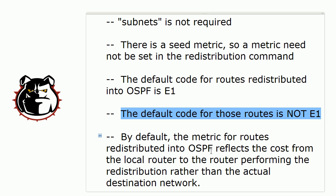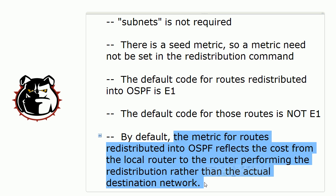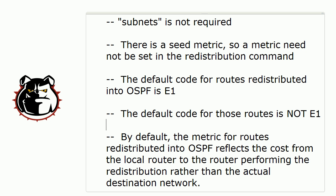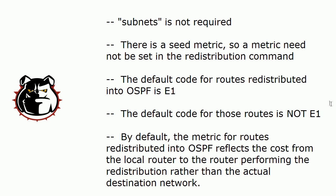Now watch statement five carefully. The metric for E2 routes redistributed into OSPF — we know the default is E2 — does it reflect the cost from the local router to the router performing redistribution? Actually, that's false. It's easy in a hurry to say 'true, because E2 routes don't reflect the entire cost' — and they don't. But what an E2 route's cost actually reflects is the cost from the ASBR, the router doing the redistribution, to the destination network. It's the cost from the local router to the ASBR that is left out.